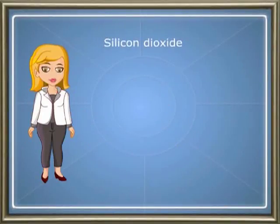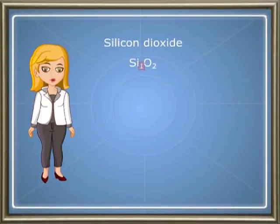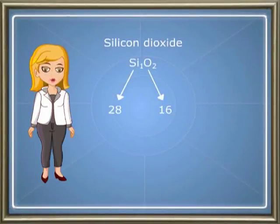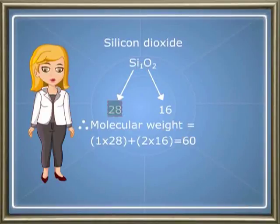The formula of silicon dioxide is SiO2. It contains one atom of silicon and two atoms of oxygen. The atomic weight of silicon is 28 and oxygen is 16. Therefore, the molecular weight of silicon dioxide is 1×28 + 2×16, which is equal to 60.